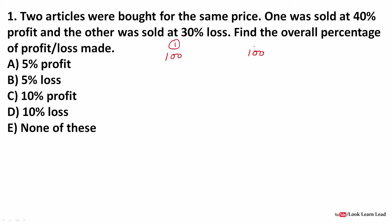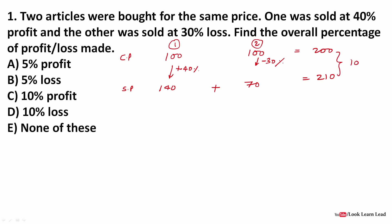Article 1 costs 100 rupees and Article 2 costs 100 rupees — total cost price is 200 rupees. With 40% profit, Article 1 sells for 140; with 30% loss, Article 2 sells for 70. Total selling price is 210. Profit is 10. Profit percentage = 10/200 × 100 = 5%. So the answer is 5% profit.